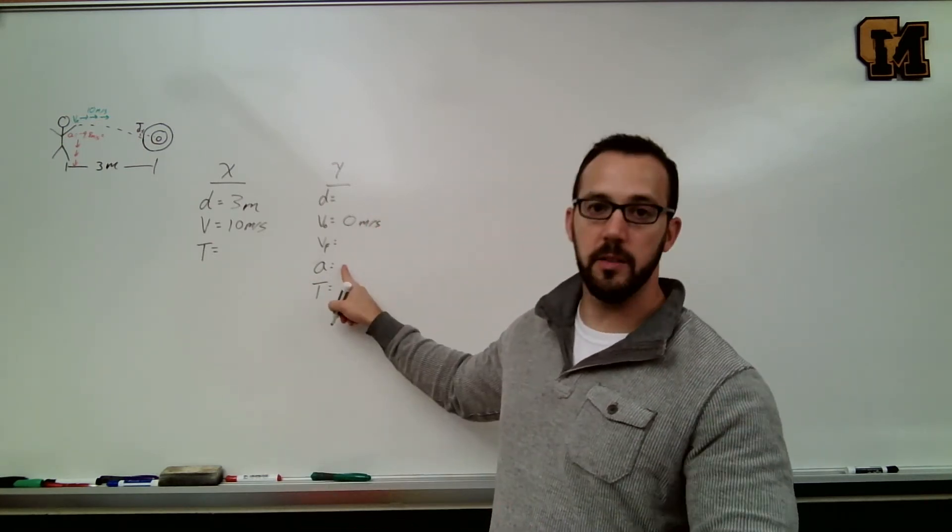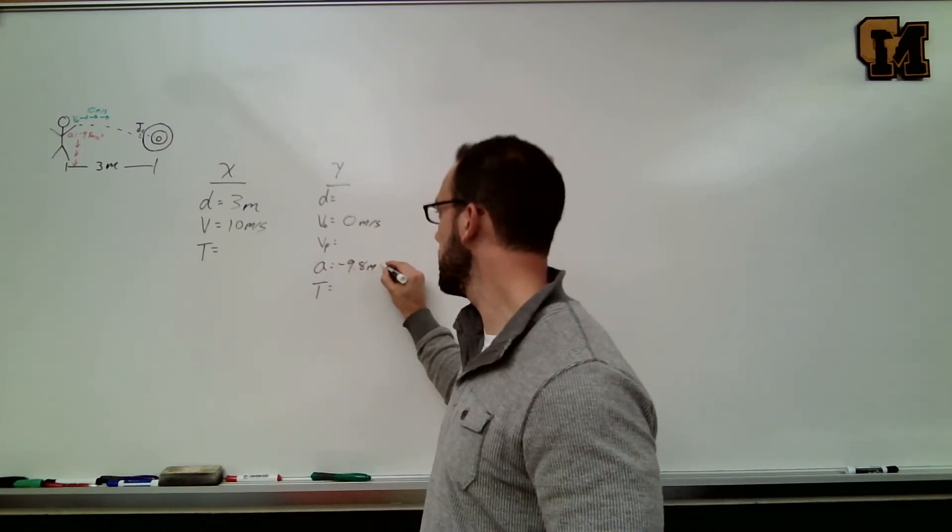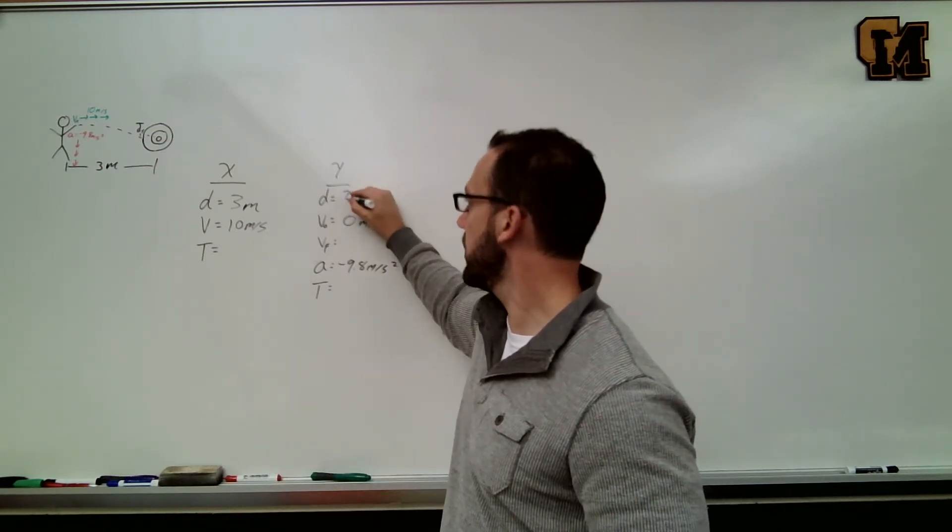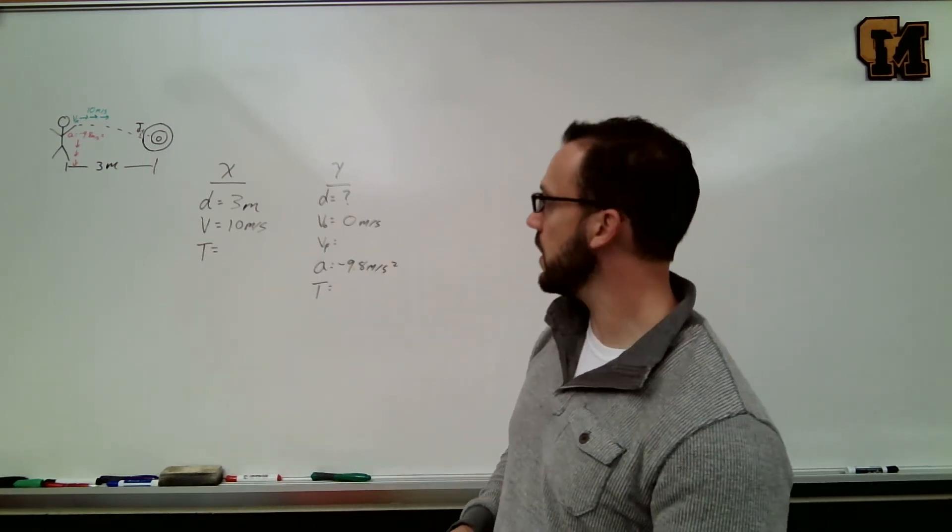The acceleration of every object in midair, as I said, is negative 9.8 meters per second squared. And the question asks, how far down does the dart fall during its trip?